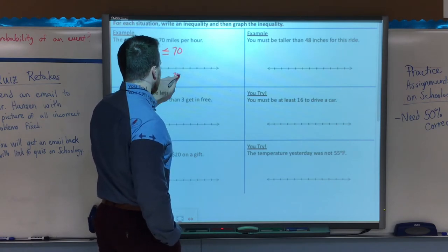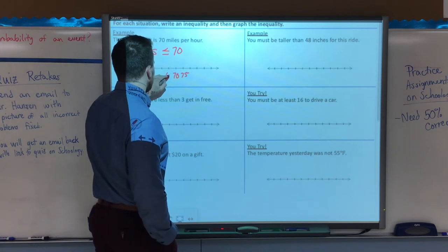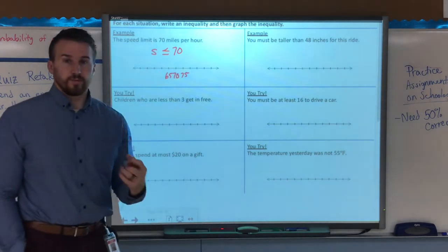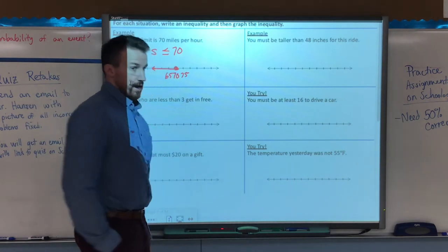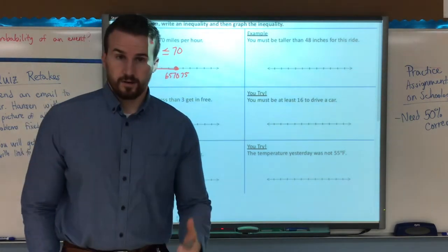So that would be less than or equal to 70. So here's my number line, here's 70, 75, 65, etc. It's going to be a closed circle at 70, and anything less than that. So that's how that goes.